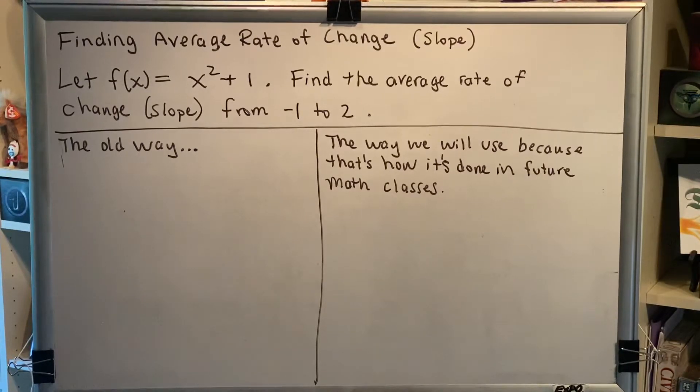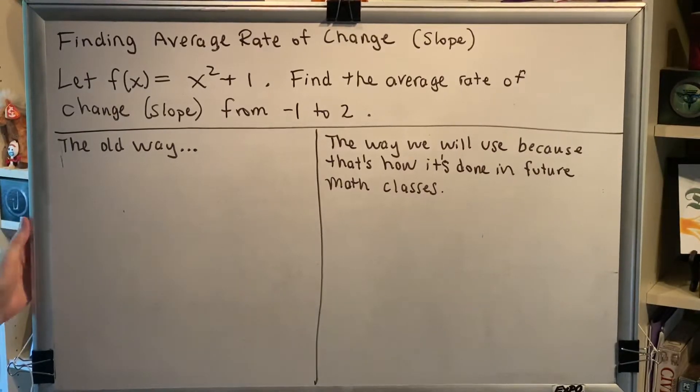Let's look at a problem. Let f of x equal x squared plus 1. Find the average rate of change, the slope, from negative 1 to 2.